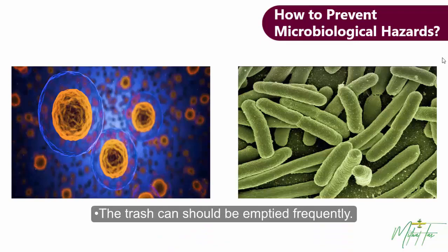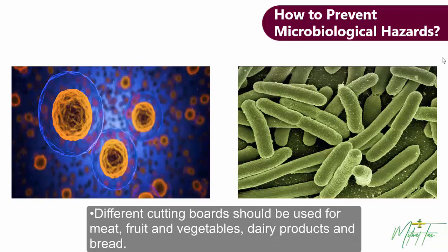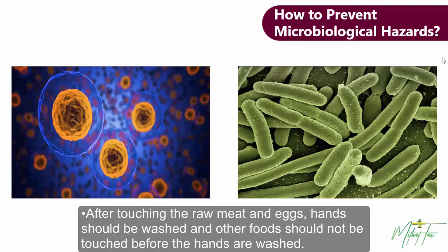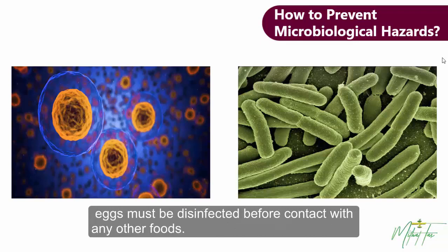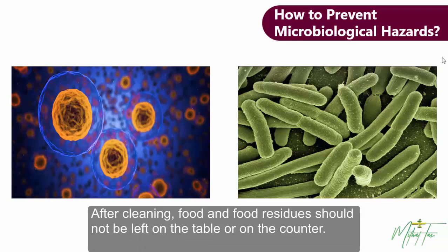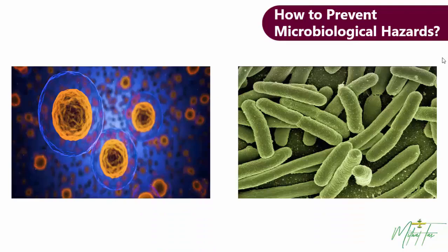The trash can should be emptied frequently. Different cutting boards should be used for meat, fruit and vegetables, dairy products, and bread. After touching raw meat and eggs, hands should be washed and other foods should not be touched before hands are washed. Containers, utensils, and any other food that has come into contact with raw meat and eggs must be disinfected before contact with any other foods. After cleaning, food and food residues shouldn't be left on the table or on the counter.